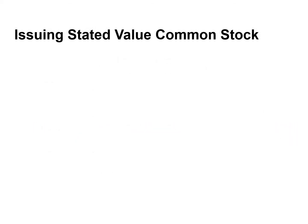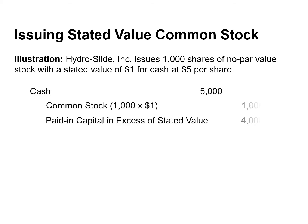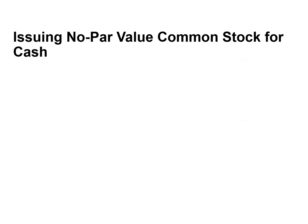Some companies issue no-par stock with a stated value. For accounting purposes, companies treat the stated value in the same way as par value. If the stock were no-par stock with a stated value of $1, the entries would be the same as those for par value common stock, except the term par value would be replaced with stated value. If a company issues no-par stock that does not have a stated value, then it credits to the common stock account the full amount received, and there is no need for the paid-in capital in excess of stated value account.